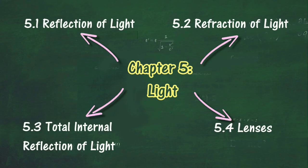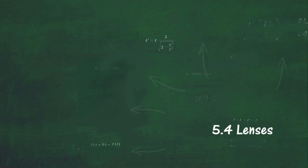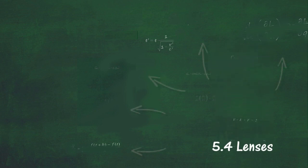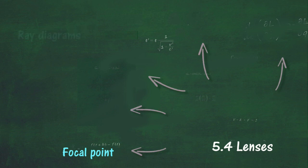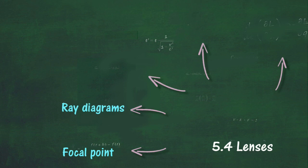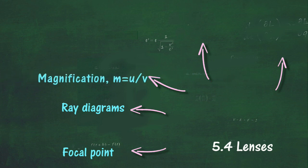At the end of this chapter, Section 5.4, we will learn about Lenses. At the end of this section, you should be able to: explain focal point and focal length, determine the focal point and focal length of a convex lens, determine the focal point and focal length of a concave lens, draw ray diagrams to show the positions and characteristics of the images formed by a convex lens, draw ray diagrams to show the positions and characteristics of the images formed by a concave lens, and define magnification as m = u / v.